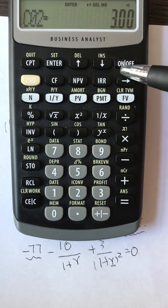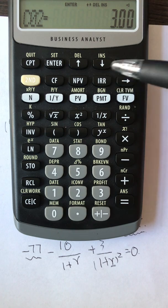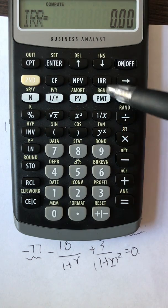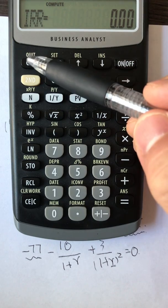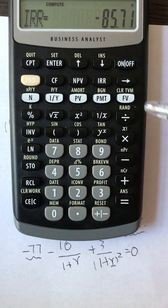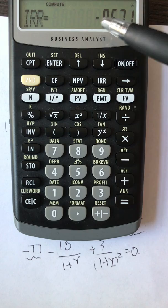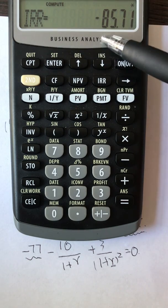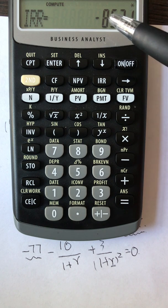Let's solve for this internal rate of return. We hit IRR and I hit compute. The calculator is computing. Now it gives you this number, the internal rate of return is negative 85.